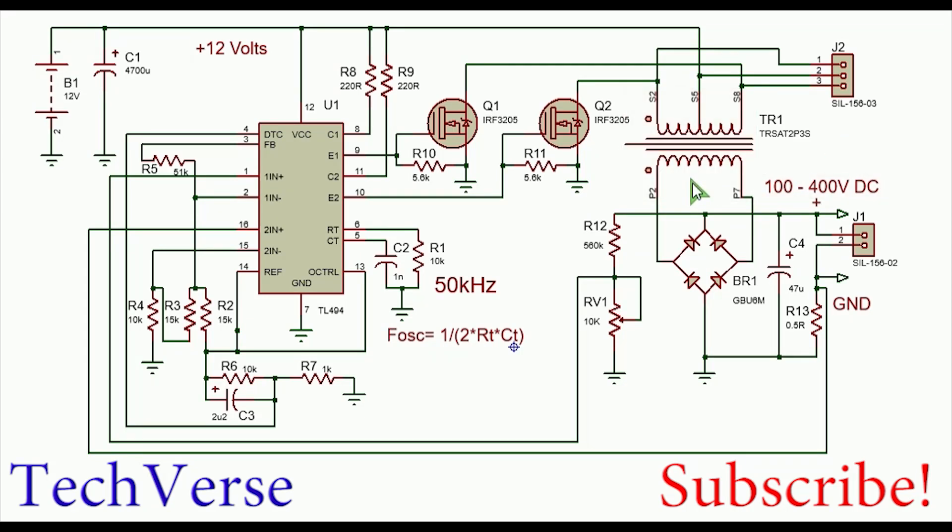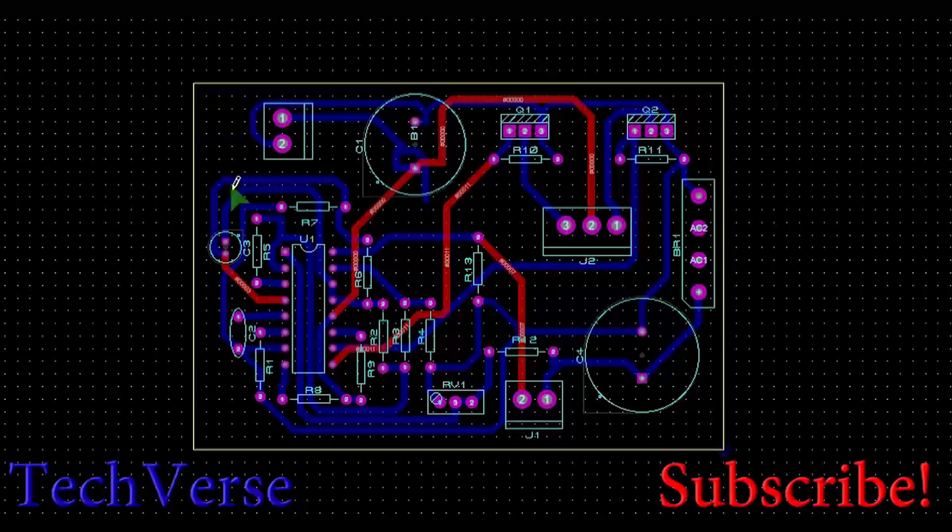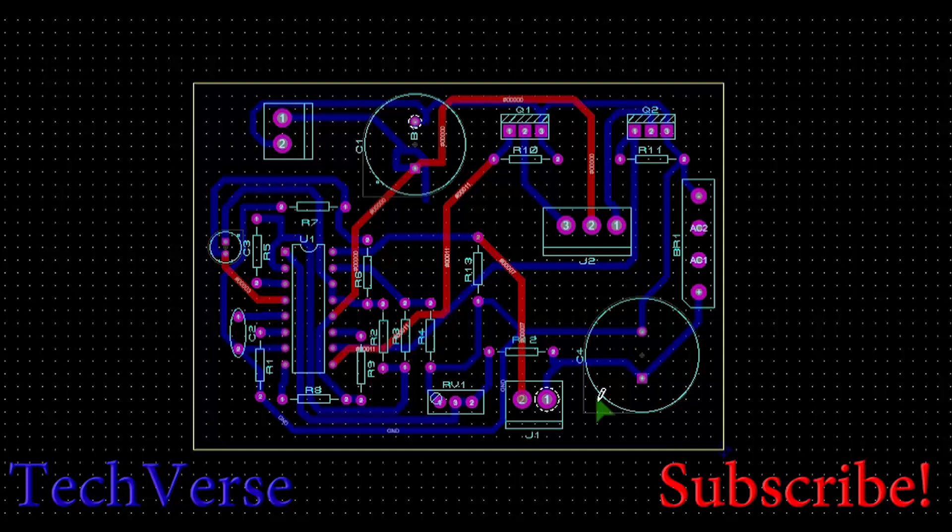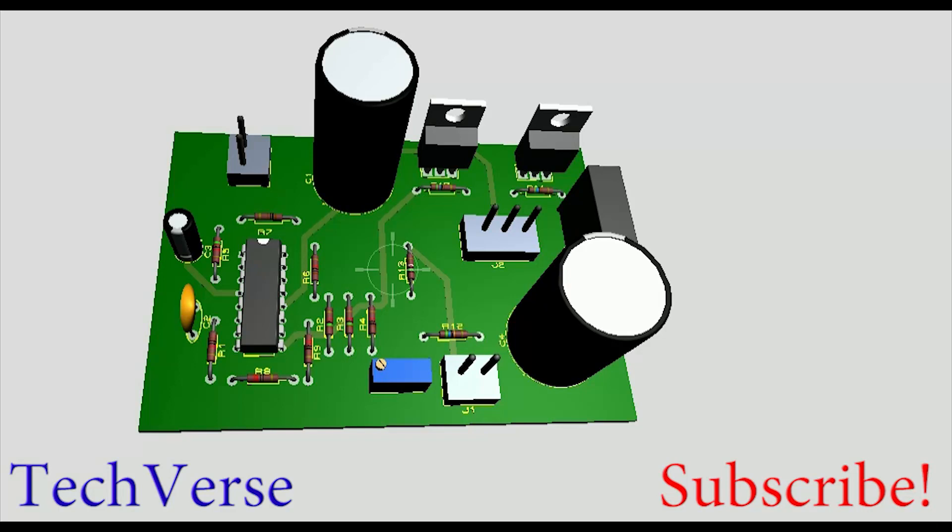The PCB looks as shown - it's a nice PCB. You have your battery, the input capacitor, output capacitor, the connections to the primary of the transformer, the power MOSFETs, the IC and its biasing circuit, the potentiometer, and this is how the board looks.